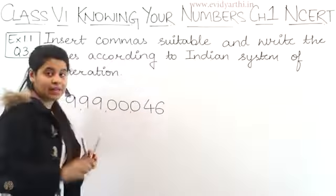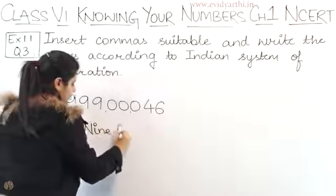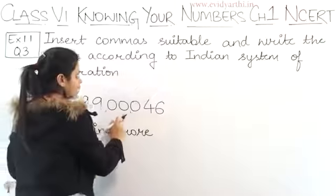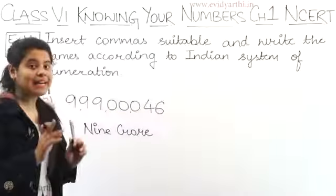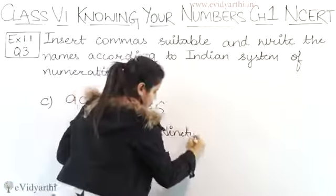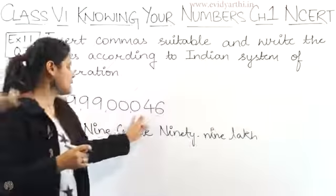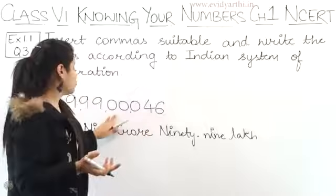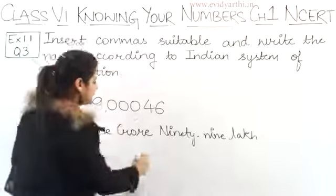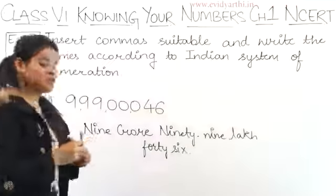Now Part C. After 99, how many digits are there? One, two, three, four, five - five digits, which comes in lakh. So 9 crore 99 lakh. And then we have all zeros, so we won't write 0000, we leave this and directly write 46. So this becomes 9 crore 99 lakh 46.